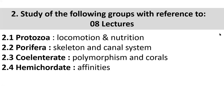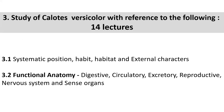The fourth chapter is the study of Calotes versicolor with reference to the following points, for 14 lectures. The systematic position - same again. Now we already studied these points in terms of Pila globosa. This year for chordates, we study Calotes versicolor - the garden lizard.